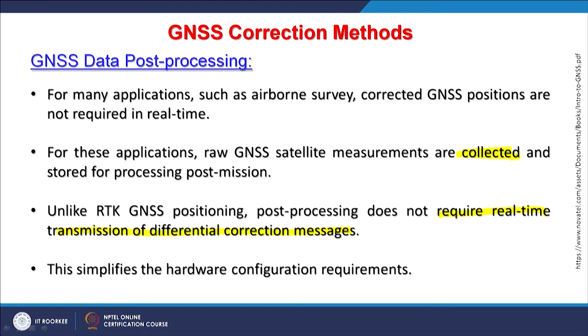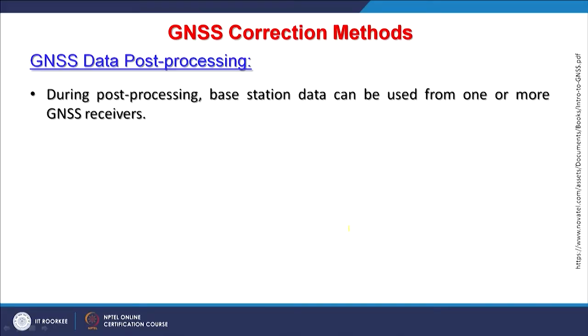This simplifies the hardware configuration requirements. For real-time SBAS, PPP or differential GNSS, you need a dual frequency receiver or a base-rover pair. But in the case of post-processing based GNSS correction, only the recording is required and later through software, using base station data, corrections can be applied. This is cost effective where real-time data is not required. During post-processing, base station data can be used from one or more GNSS receivers to achieve better accuracy.